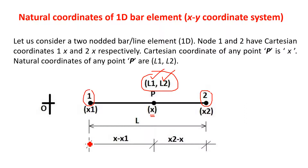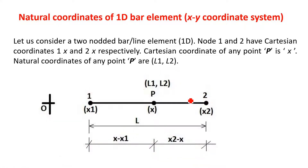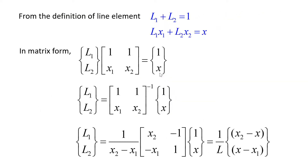The distance of point P from the left node 1 is X minus X1, and from point P to node number 2 it is X2 minus X. Since there are two unknowns, we have to develop two equations. The very first equation is L1 plus L2 is equal to 1, which means the sum of natural coordinates is always equal to unity.